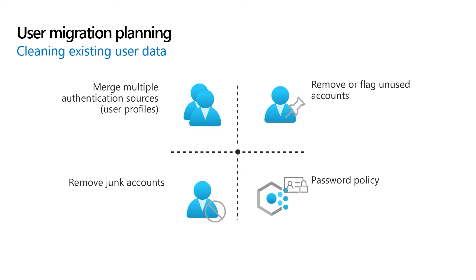Ensure that accounts with junk email addresses, login identifiers, or data are removed in the pre-processing step. Consider using one of the third-party email list cleaning services that can quickly flag junk accounts in the system. If your existing identity provider has timestamps corresponding to the last time a user accessed your services, you might consider either leaving some accounts behind entirely or flagging them for future deletion as you migrate.